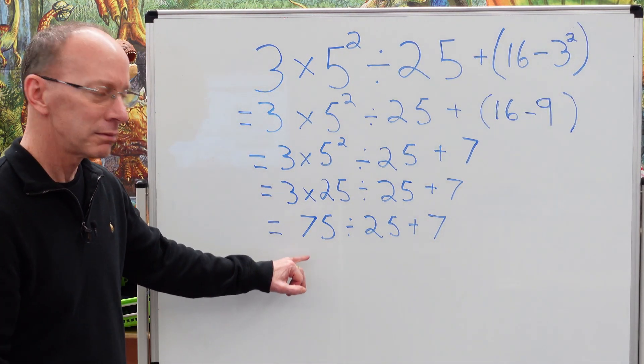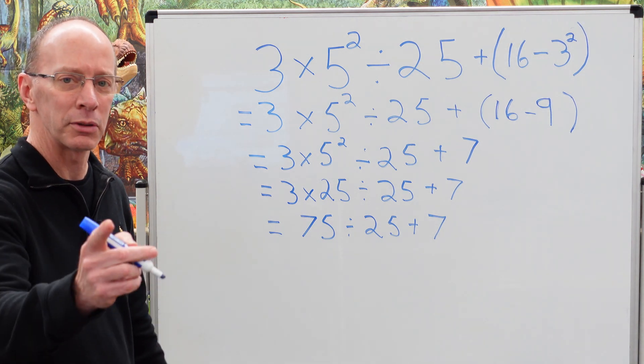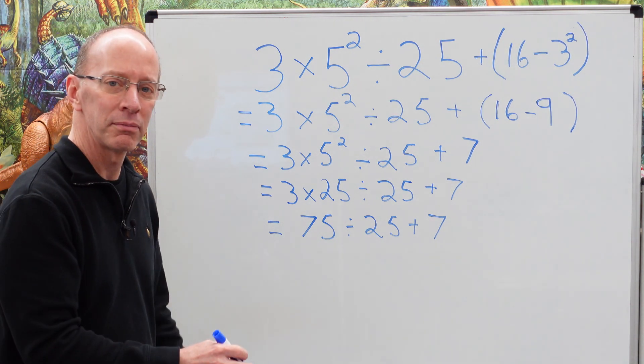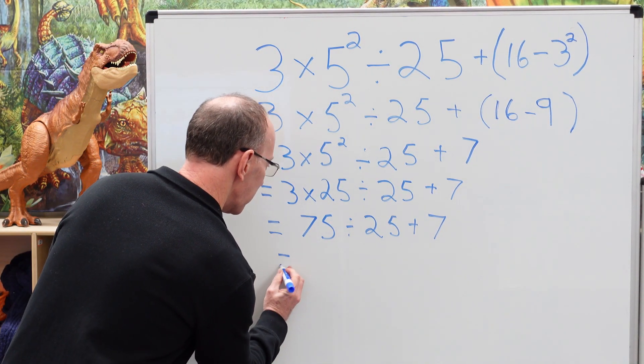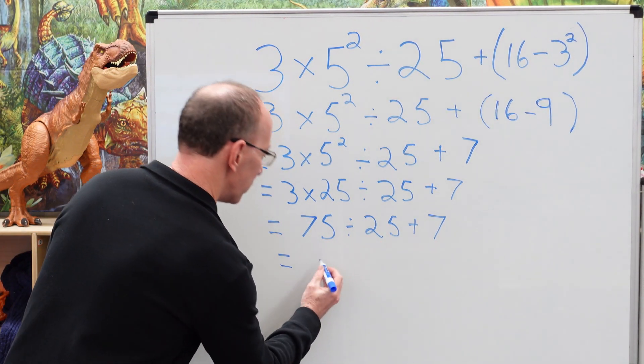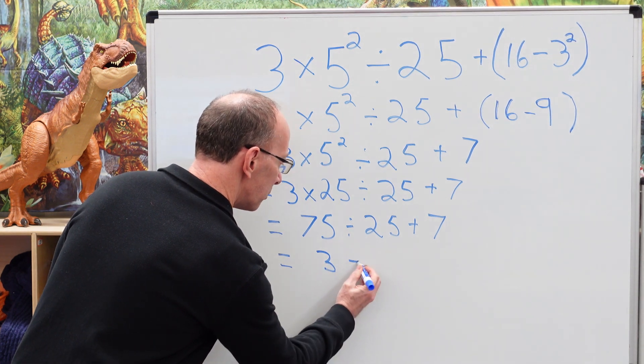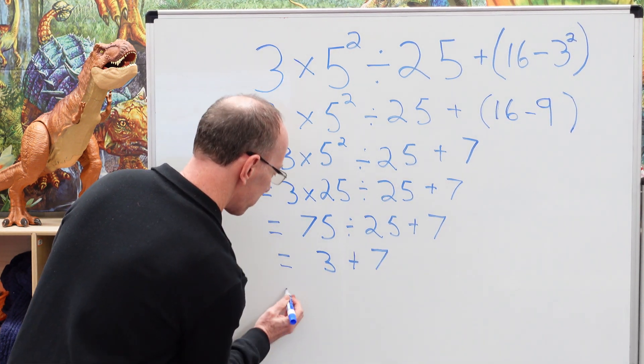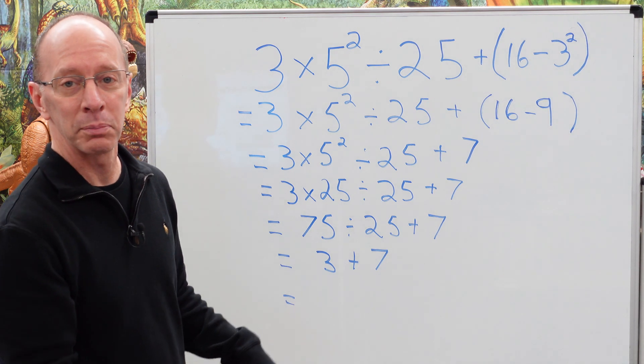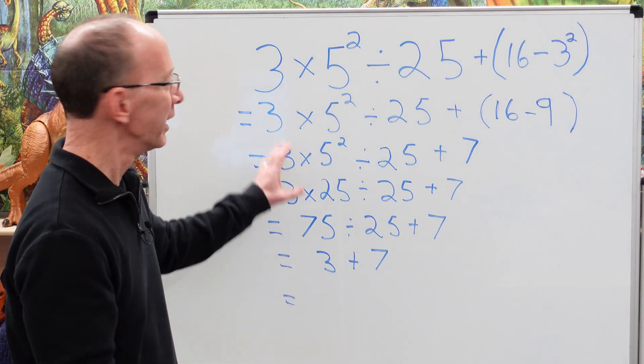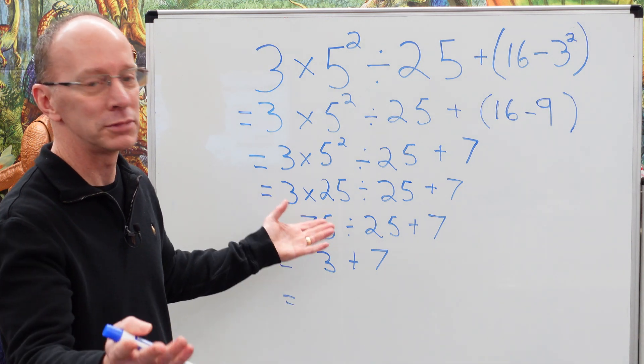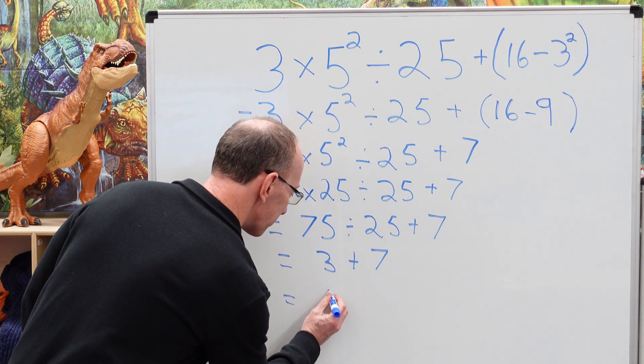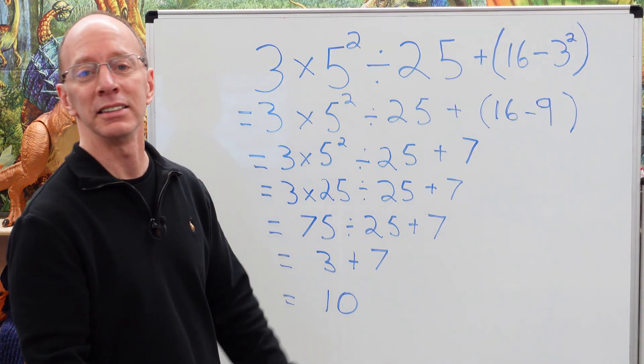75 divided by 25. How many times do we put 25 into 75? Three times. So 75 divided by 25 is 3 plus 7. 3 plus 7. Oh my goodness. With all this work right here, 3 plus 7, 10. You got it. Ten it is.